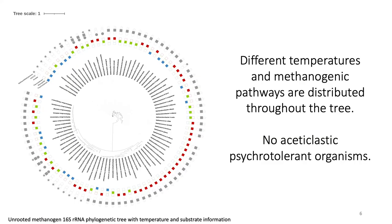Now let's have a look at the phylogeny of the organisms. I define methanogens as every archaeum containing methylcoenzyme M-reductase, short MCR, alpha, beta, and gamma subunits, which are a total of 295 organisms. This here is a subset of those that have temperature data available, which is the set I'm showing in the following analyses as well. There are a total of 86 organisms. The shapes in the tree indicate the different substrates, where the colored boxes represent the temperature classes. We can see that temperatures and substrates are distributed throughout the phylogenetic tree, and that the only real trend we can observe is that there are no acetoclastic psychotolerant organisms.